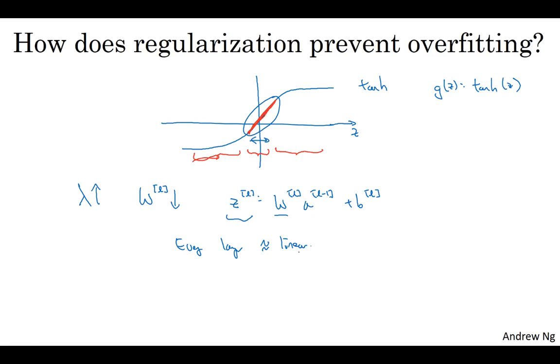So it's not able to fit those very, very complicated decision, very non-linear decision boundaries that allow it to really overfit the data sets, like we saw on the overfitting high variance case on the previous slide.